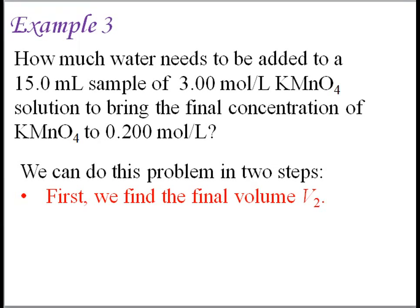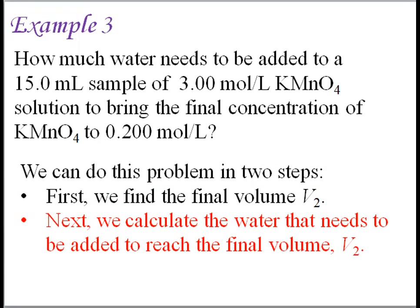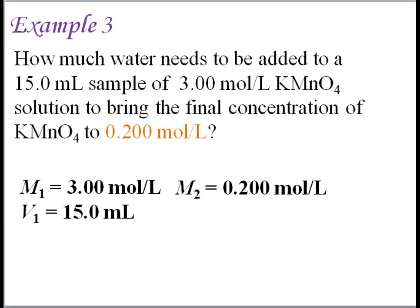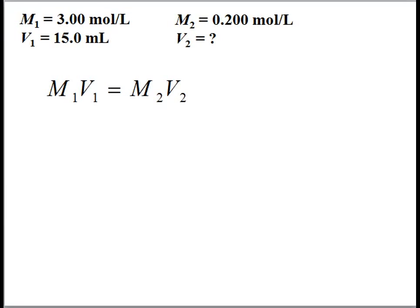The initial concentration, M1, is 3 moles per liter, and the initial volume of the sample, V1, is 15 milliliters. The final concentration of the diluted solution, M2, needs to be 0.2 moles per liter. The final volume of the diluted solution, V2, is our unknown. In the first step, we find the total volume of the diluted solution V2 by writing the dilution formula.